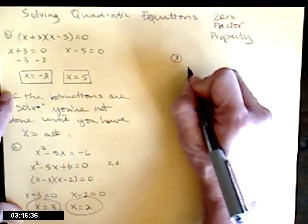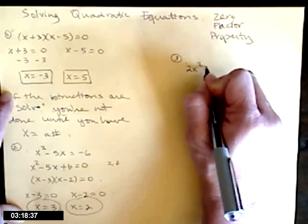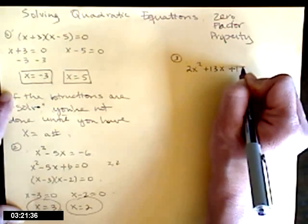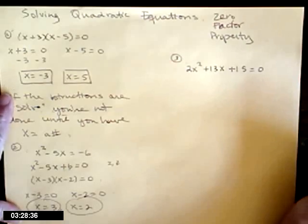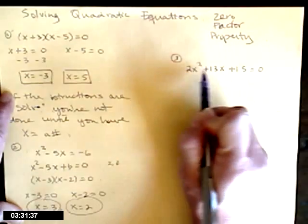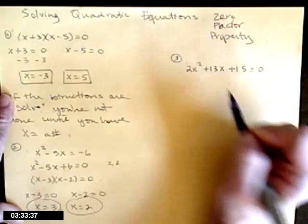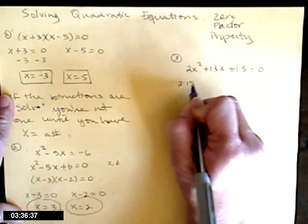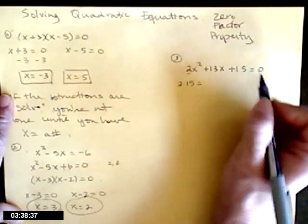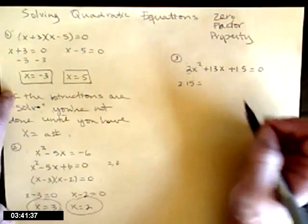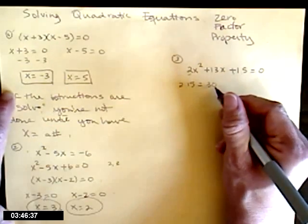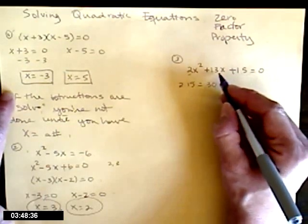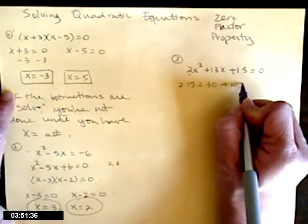Example 3: 2x squared plus 13x plus 15 equals 0. Don't forget all the factoring you've already learned. It's a trinomial where the leading coefficient is not 1, so I'm going to use the AC method. A is the leading coefficient, C is the constant term. 2 times 15 is 30. Since 15 is positive, I need factors that multiply to 30 and add to give 13 — that's 10 and 3.